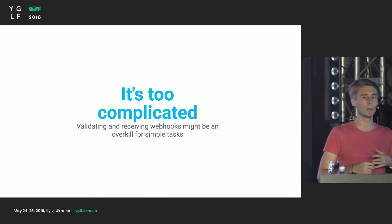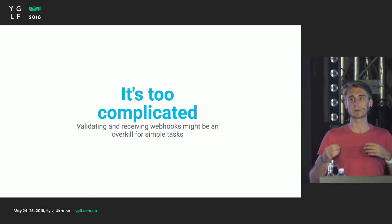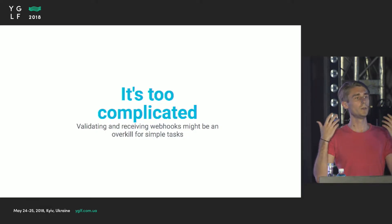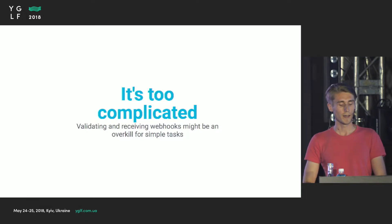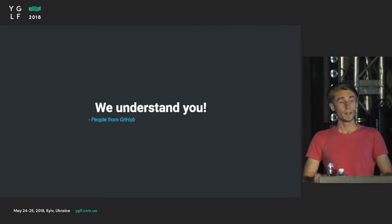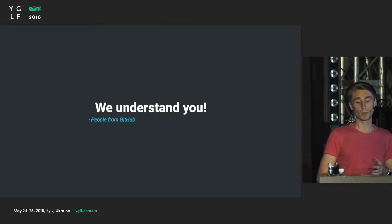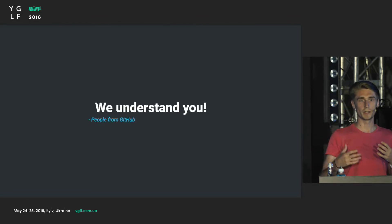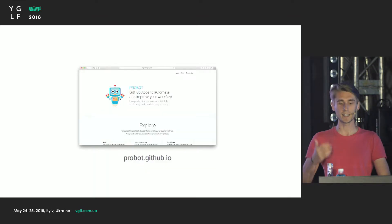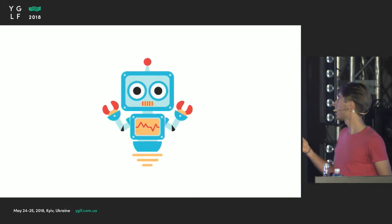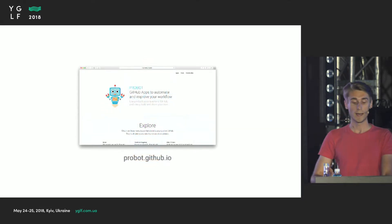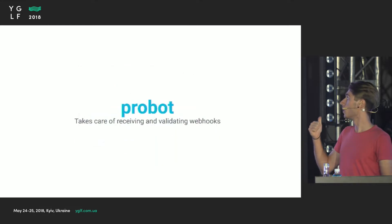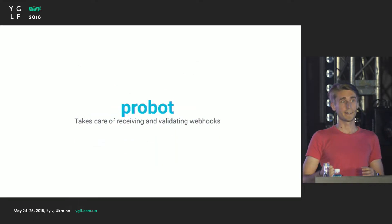However, validating and receiving webhooks might be overkill if you want to build a simple application that will greet new contributors to your repository. People at GitHub understood this problem and wanted to simplify the process of creating robots, so they built a nice framework with a great logo — you can check it out at probot.github.io. The name is Probot.